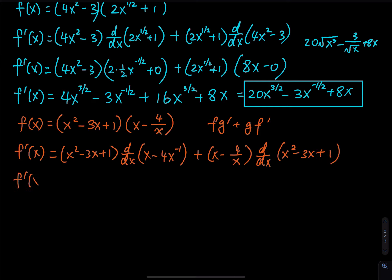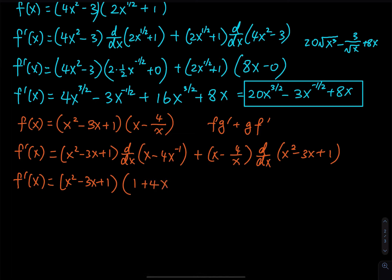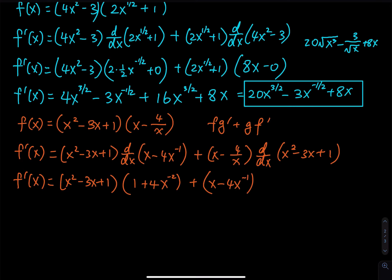Let's do the derivatives. Copy x squared minus 3x plus 1. The derivative of x is 1 (slope of a linear function), bring the negative 1 down past the 4, and negative 1 minus 1 is negative 2. For the first factor: the derivative of x squared is 2x, the derivative of 3x is 3, and the derivative of 1 is 0.